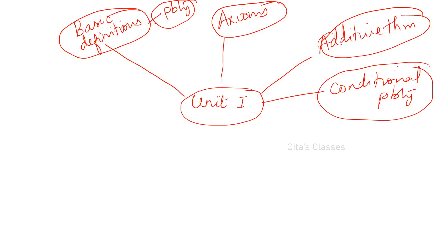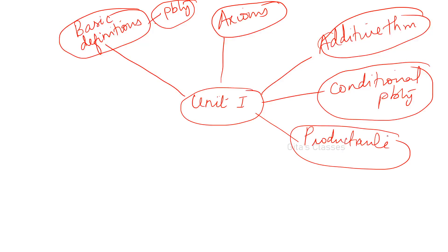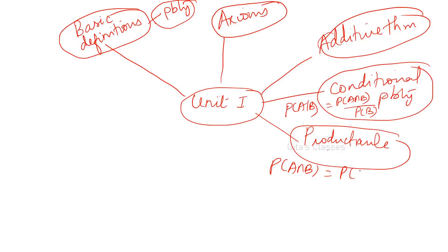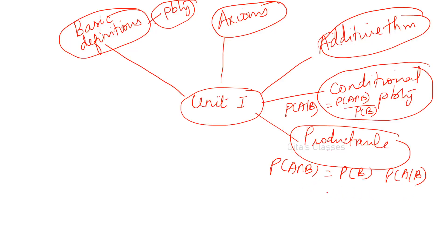You can expect one definite question from conditional probability and the product rule. Conditional probability: P(A|B) = P(A∩B) / P(B). Similarly P(B|A) can be defined. From this, the product rule: P(A∩B) = P(B) · P(A|B). Alternatively, P(A∩B) = P(A) · P(B|A).